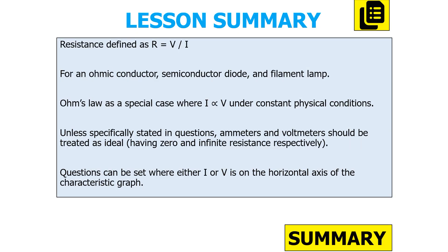To summarise today's lesson: resistance is R equals V over I; for an ohmic conductor, semiconductor diode, and filament lamp we can draw IV graphs; Ohm's law is a special case where I is directly proportional to V under constant physical conditions; and we can treat ammeters and voltmeters as ideal. Note that in exam questions, either I or V may be on the horizontal axis of the characteristic graph.